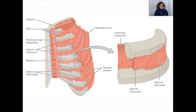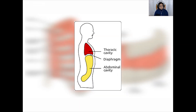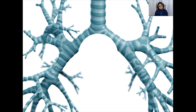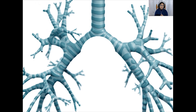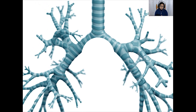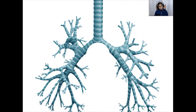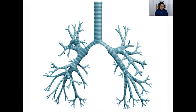The diaphragm separates the contents of the thorax from the abdomen. It is not flat but a shallow dome shape, with a fibrous middle part forming the roof of the dome and muscular edges forming the walls. The air passages of the lungs form a highly branching network, which is why it is sometimes called the bronchial tree, because it branches just like a tree.